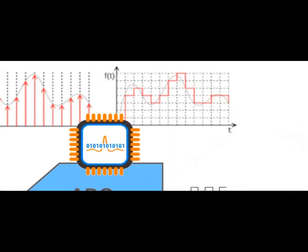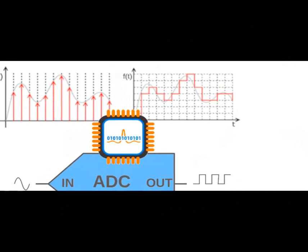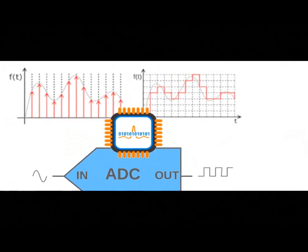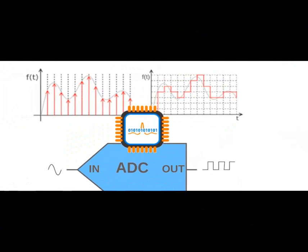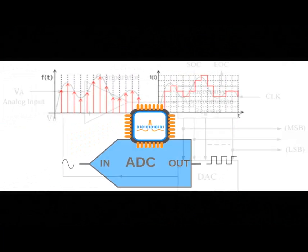The accuracy of the digital representation depends on the ADC's resolution. Higher-resolution ADCs can represent the analog signal with greater precision but may require more complex circuitry.